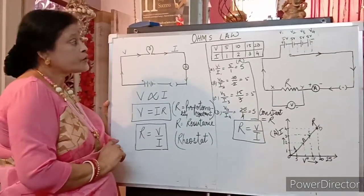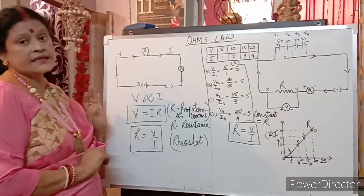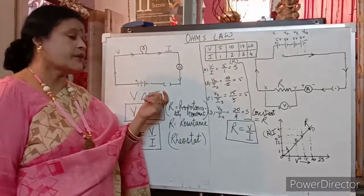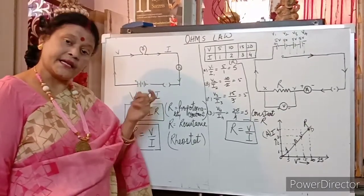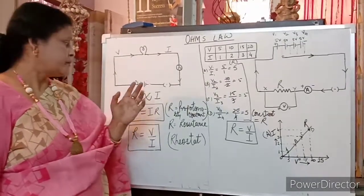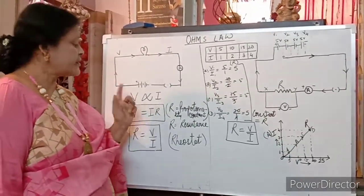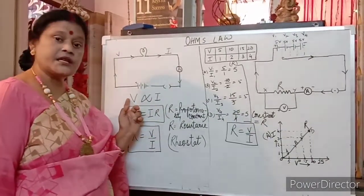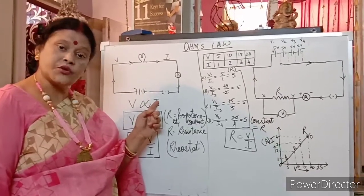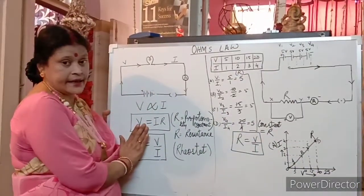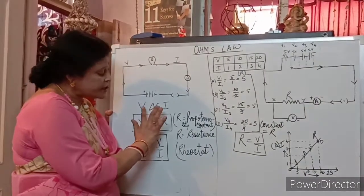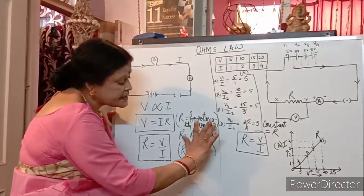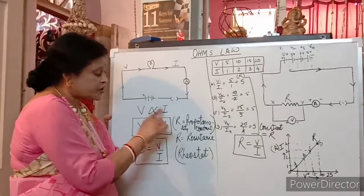Ohm's Law states: at constant temperature, the potential difference is directly proportional to the flow of current across its ends. Whether I is directly proportional to V or V directly proportional to I — if one variable increases, the other automatically increases. When we put the equal sign, V is equal to a proportionality constant, which we call R.